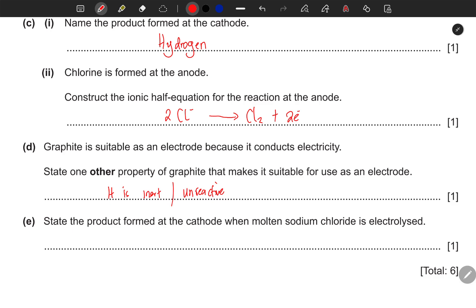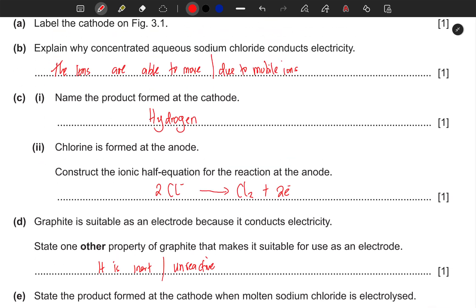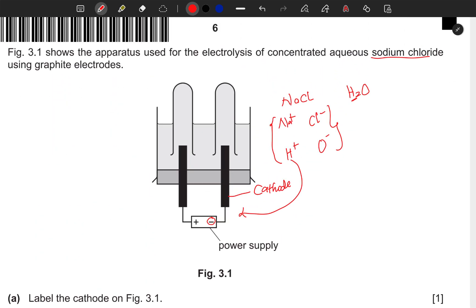State the product formed at the cathode when molten sodium chloride is electrolyzed. Now we are no longer dealing with aqueous, the whole thing here was aqueous. Now let's assume we are dealing with a molten solution of the same sodium chloride. In molten, there's no need of water to be present.